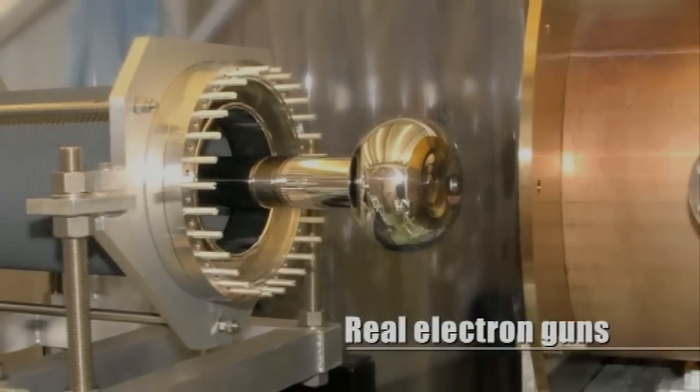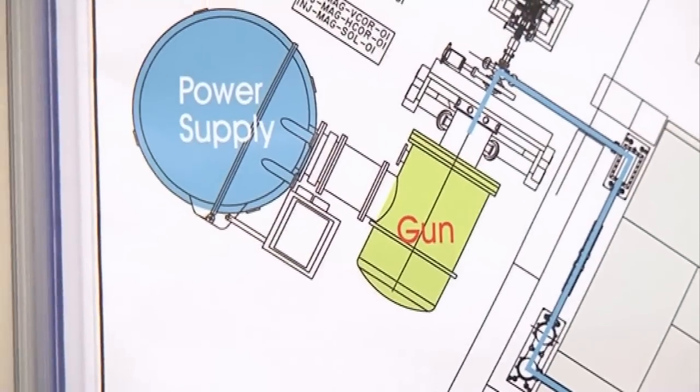We can't really improve the quality of the electron beam at any point further down the accelerator, so if we start off with bad electron bunches, then it just doesn't get any better.